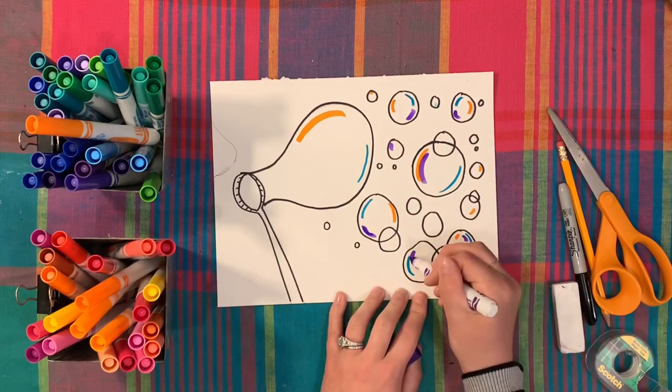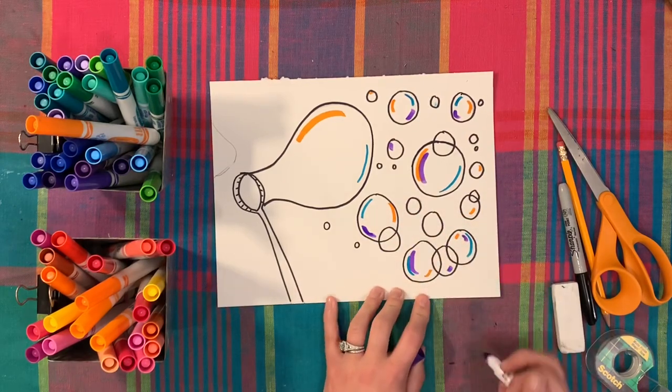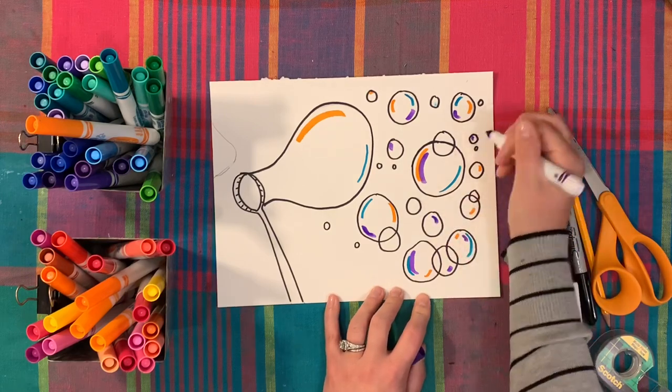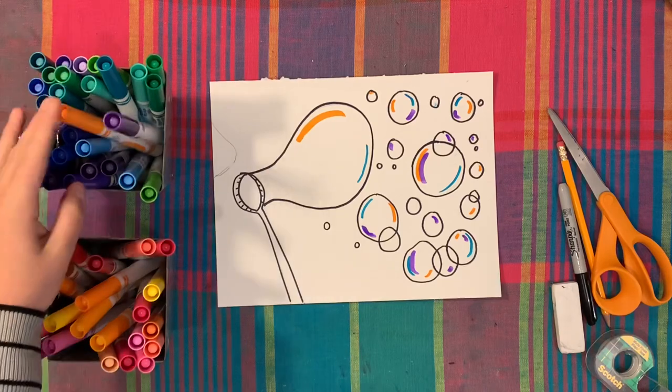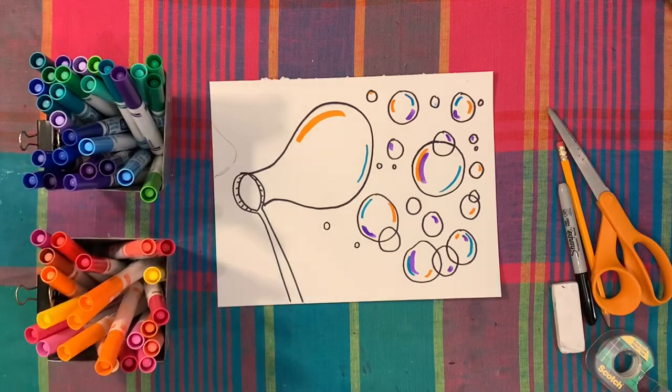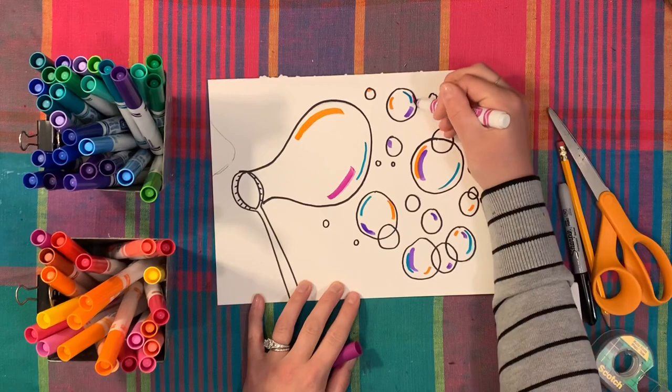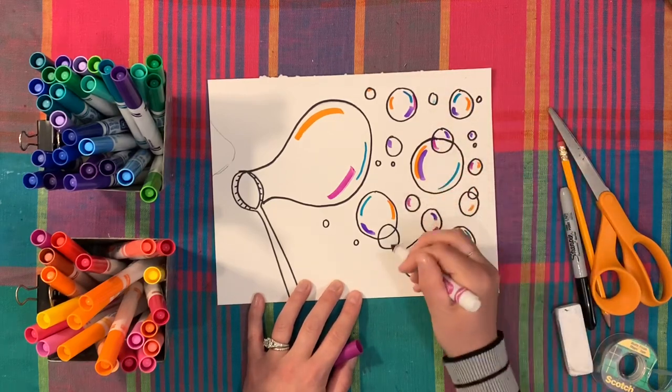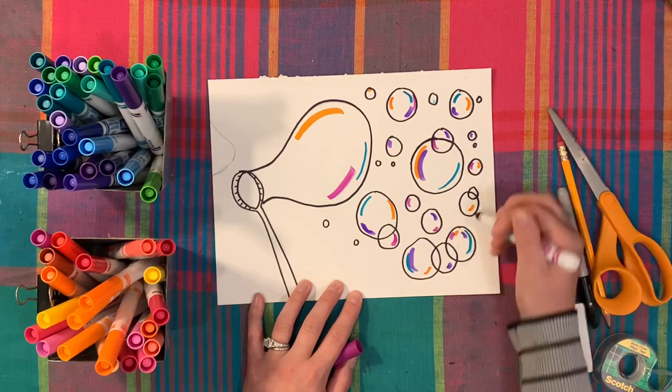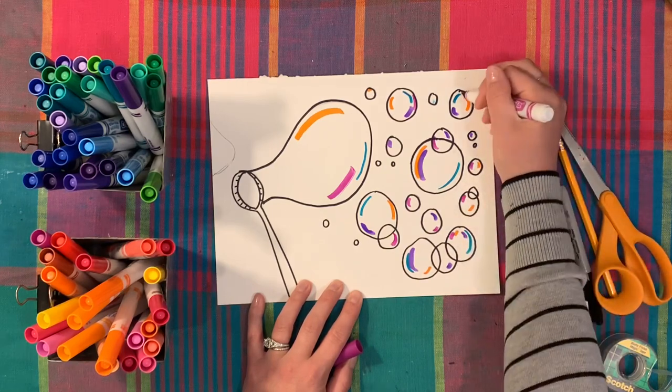They can be next to each other. They can be on the opposite sides. If you want to stick with a color family, maybe all your bubbles are cool colors, or maybe they're all warm colors. That is your choice. Just make sure that you remember you are not coloring in your bubbles. You are making curved lines. I'm going to go ahead and do that to all my bubbles, and you can start too.